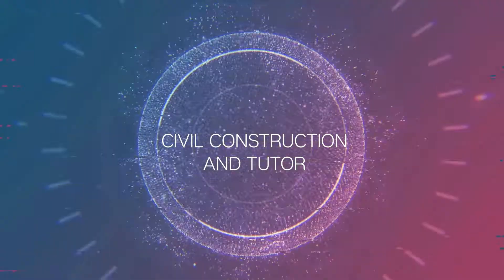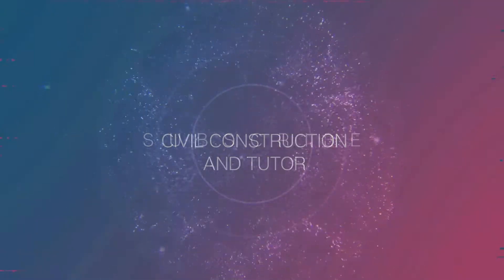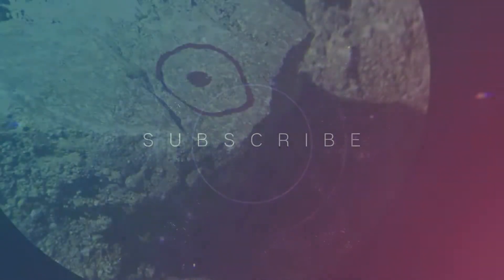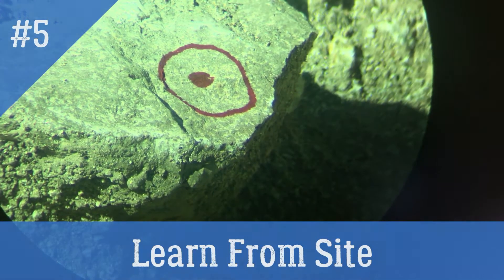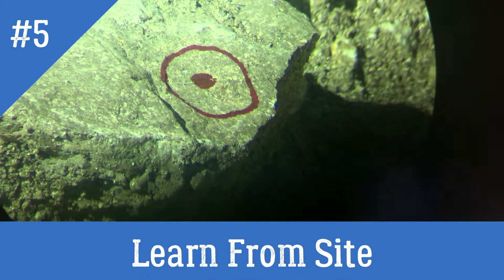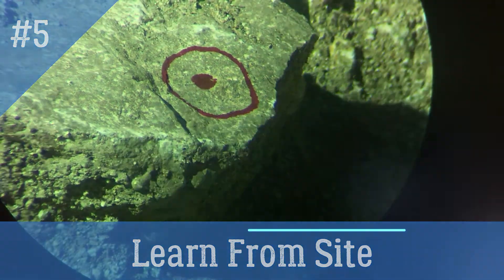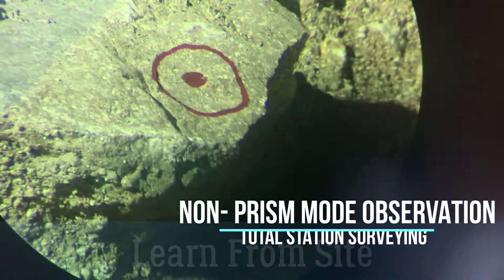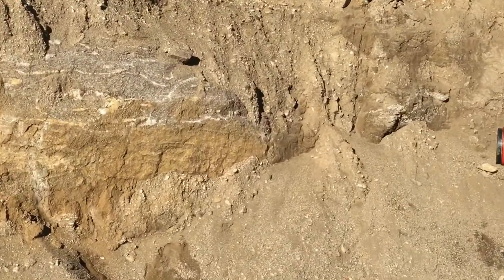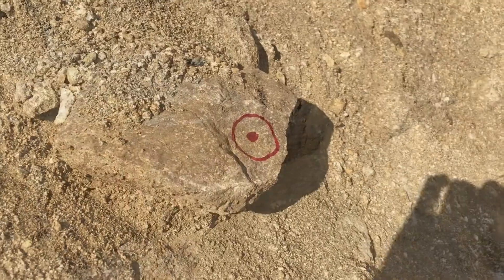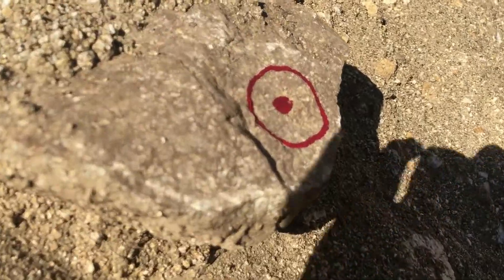Hello guys and welcome back to my channel Civil Construction and Tutor. This is the fifth video in the video series 'Learn from Site.' In this video I will show you how you can find the coordinate of a point without using any prism or reflector — that is, using the non-reflector mode of the total station.